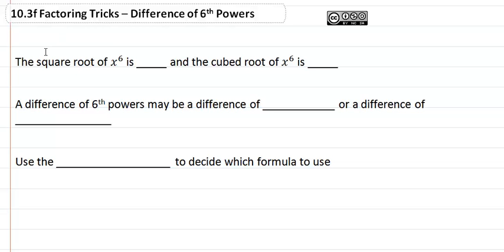10.3f Factoring Tricks: the Difference of Sixth Powers. The square root of x to the sixth is x cubed, and the cubed root of x to the sixth is x squared.